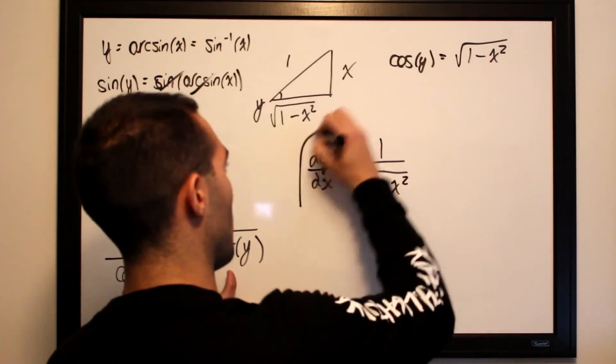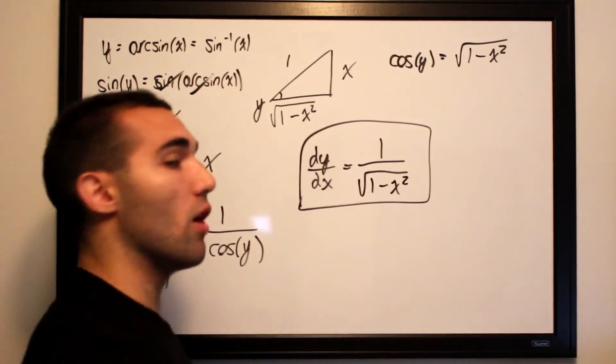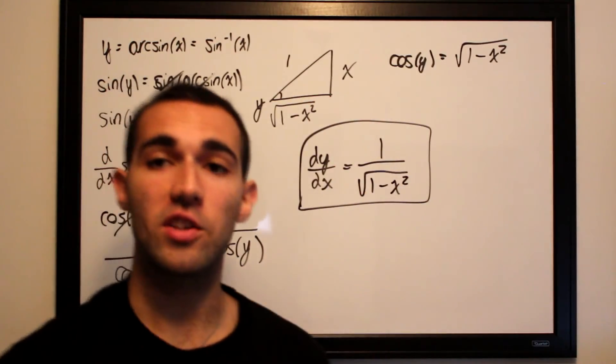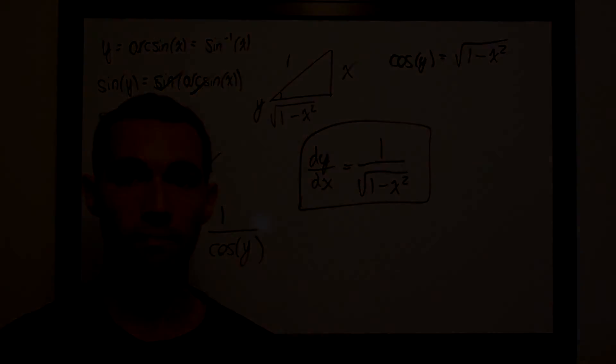So dy/dx is equal to 1 over the square root of 1 minus x squared, derived using implicit differentiation.